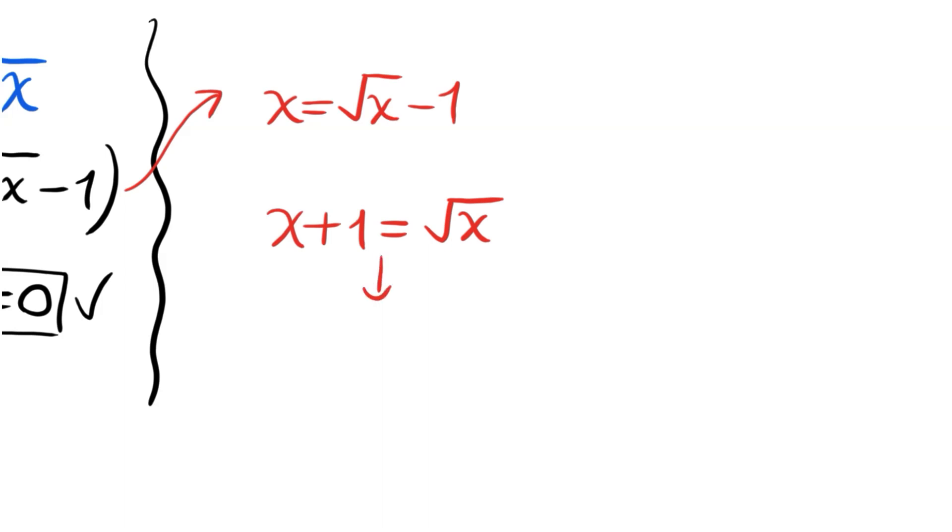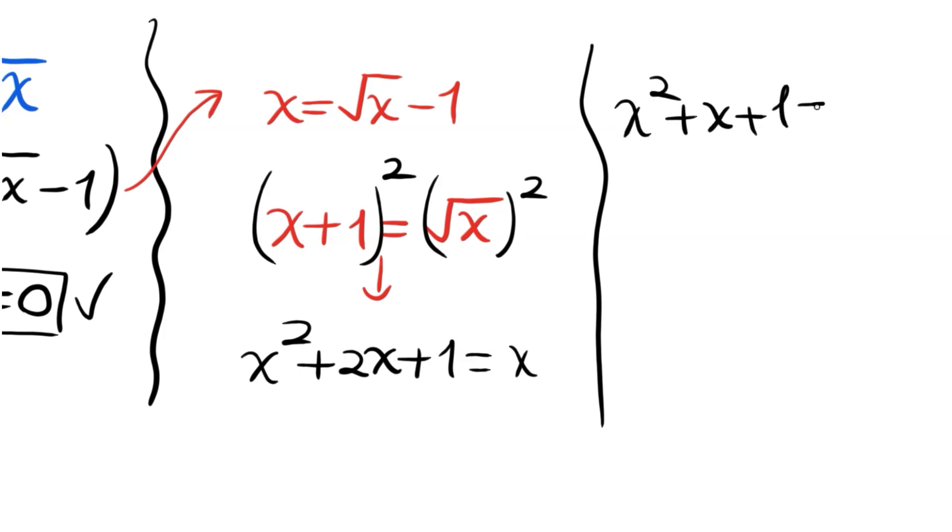Then, as I said, let's square both sides. We will have x² + 2x + 1 = x. So this becomes x² + x + 1 = 0.